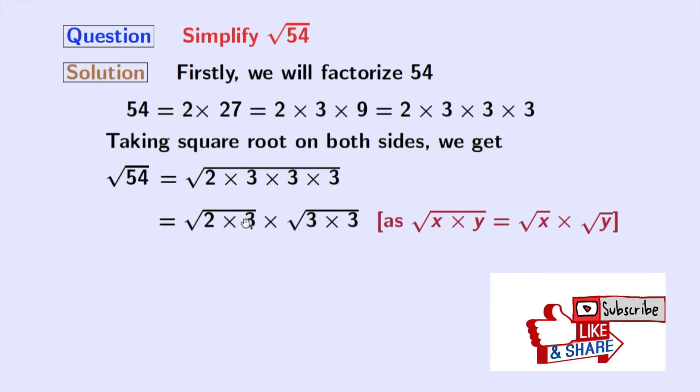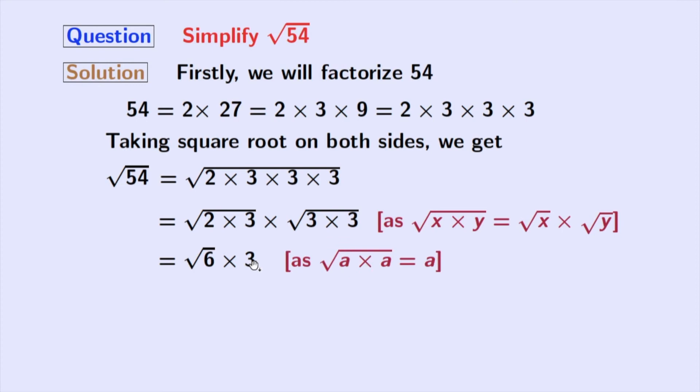From the first square root, we get square root of 6 and from the second square root, we get 3. In the second square root, we have used the rule of square root of a times a is equal to a. Here, a is 3.